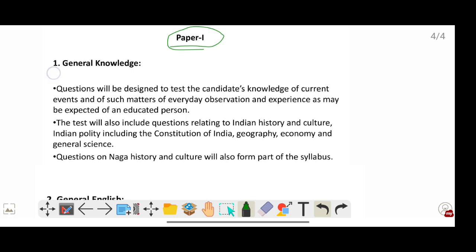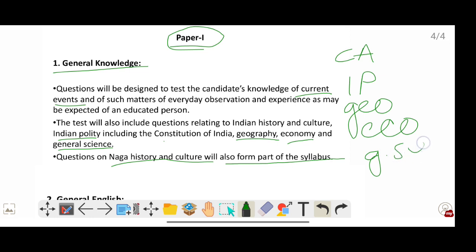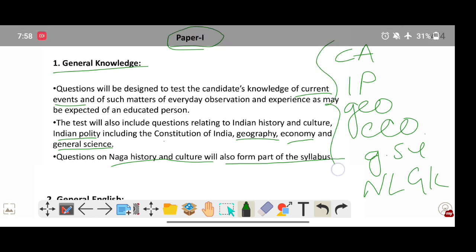General Knowledge. Under this there will be current affairs, current events, and Indian polity, geography, economy, and general science. Nagaland history and culture will also be part of the syllabus. So the topics are current affairs, Indian polity, geography, economy, general science, and Nagaland GK. These are the subjects under General Knowledge.